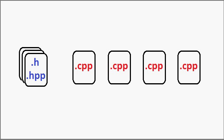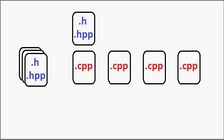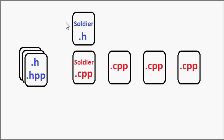Even though the compiler does not compile .h and .hpp files — it only compiles .cpp source files — the compiler will listen if you ask it to include a header file, and it will consider it as if you have typed up that header file inside of the source file, as we will learn a little bit later. So the soldier source file includes the soldier header file, and they both get compiled together.